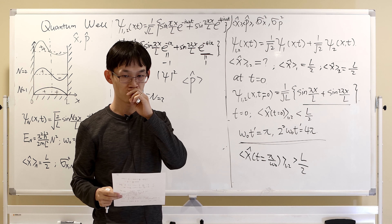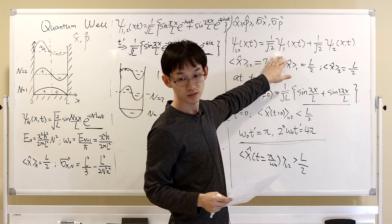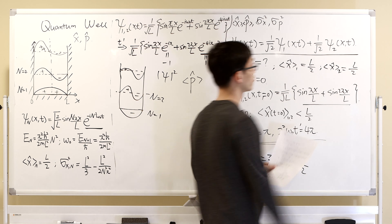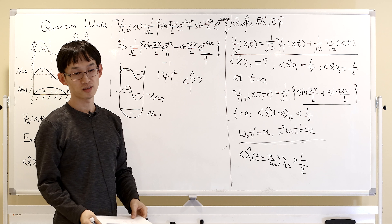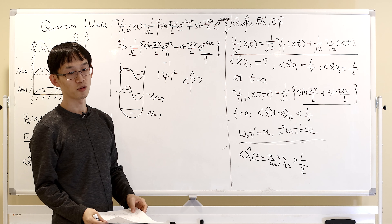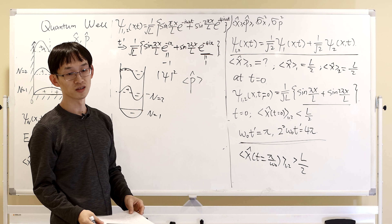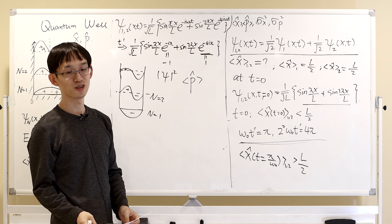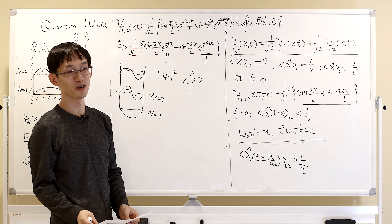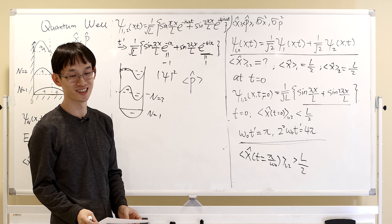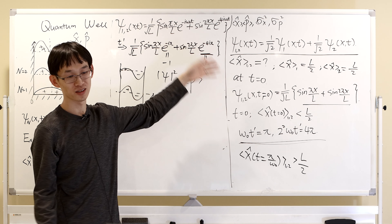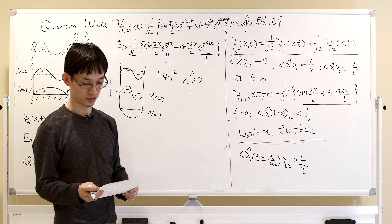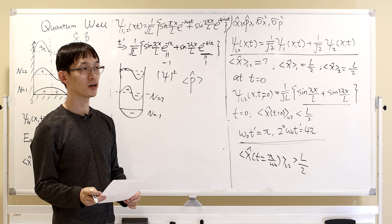How would we arrive at this wave function? I gave you an example of a superposition state and chose the easiest one. There's no specific reason for this choice. You will see this again in homework and exams where I choose some function and ask you to describe the behavior of the electron.